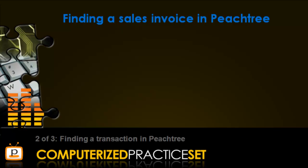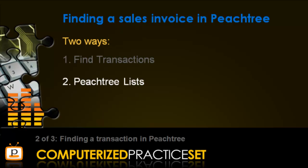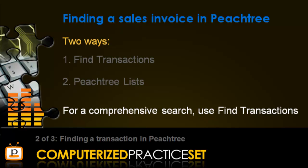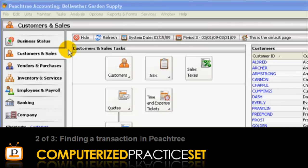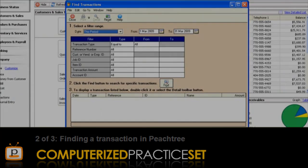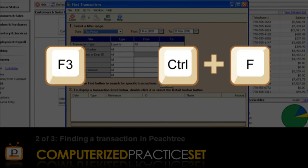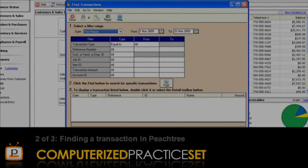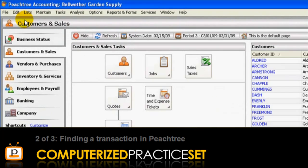The problem we're trying to find relates to a sales invoice. Peachtree provides two ways to find a sale transaction: using the Find Transactions window or one of the Peachtree lists. If you want to conduct a comprehensive search, you should use the Find Transactions window. To access this window, go to the Edit menu and select Find Transactions, or just press F3 or Ctrl+F. For more information on using the Find Transactions window, view the Peachtree demo video on finding transactions.